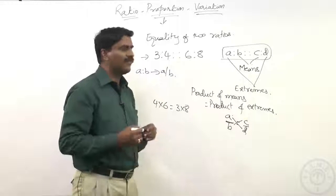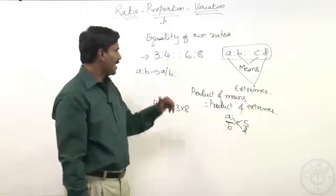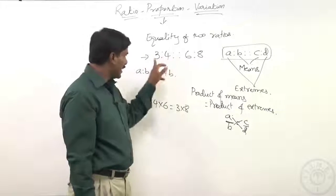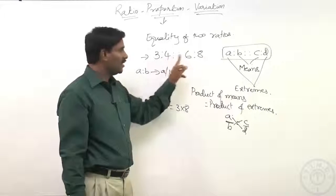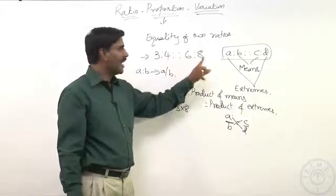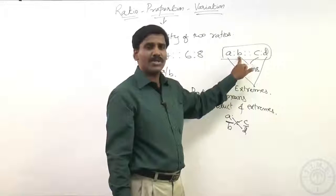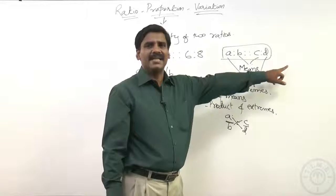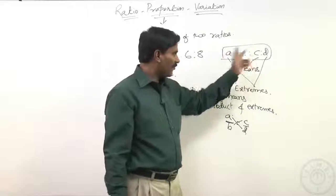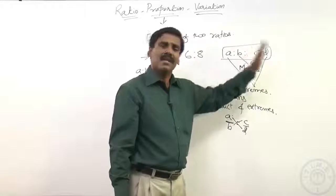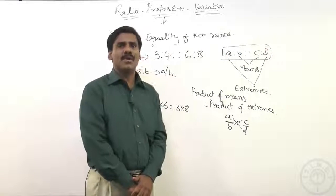That is the reason every time we will be having product of means equal to product of extremes — this is one important point to keep in mind while dealing with proportion. The first term is called first proportion, second term is second proportion, third term is third proportion, and the last term is fourth proportion — like a, b, c, and d respectively. If three terms are given out of four, we can definitely find the fourth term using product of means equals product of extremes.